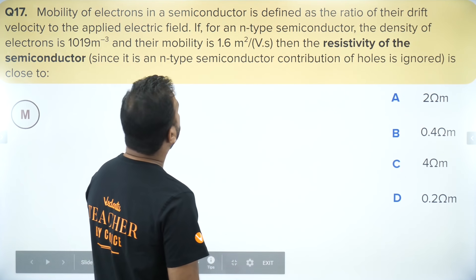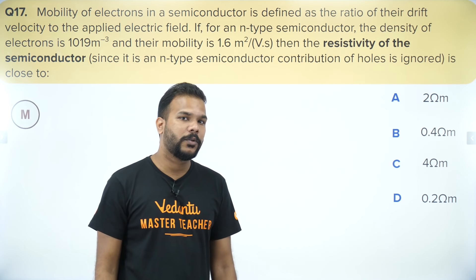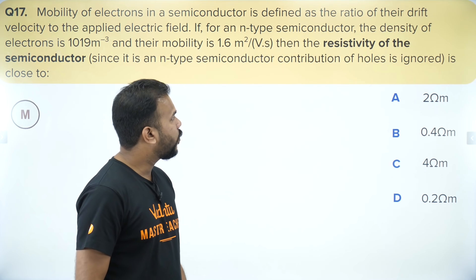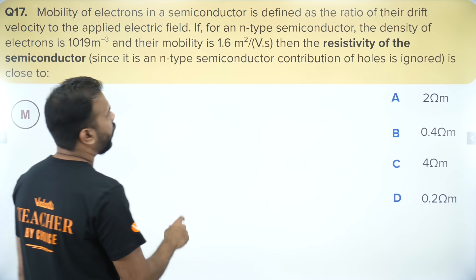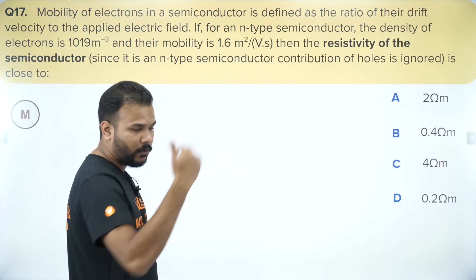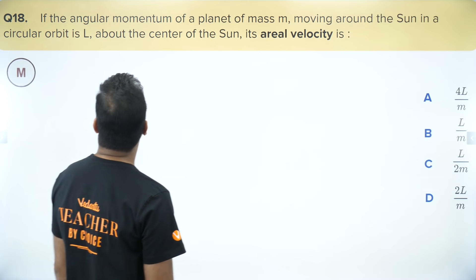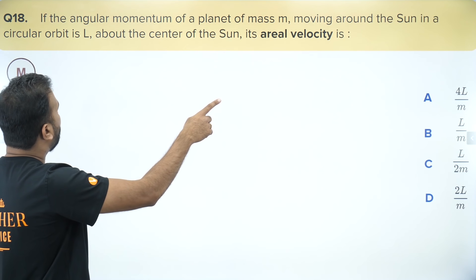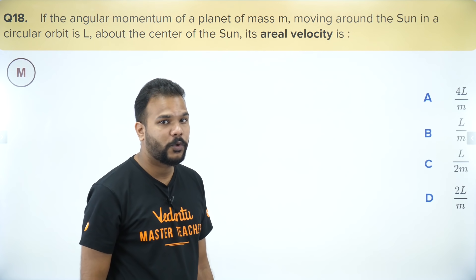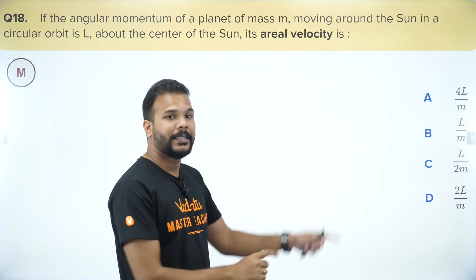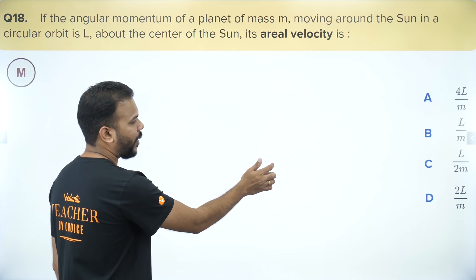A semiconductor — find its resistivity using Ohm's law in terms of current density: J = σE, so resistivity = 1/conductivity. Marking as mediocre. A planet revolving around the sun with angular momentum given — find aerial velocity. If you know Kepler's law of planetary motion directly, it is easy; otherwise you need a derivation. Marking as mediocre.